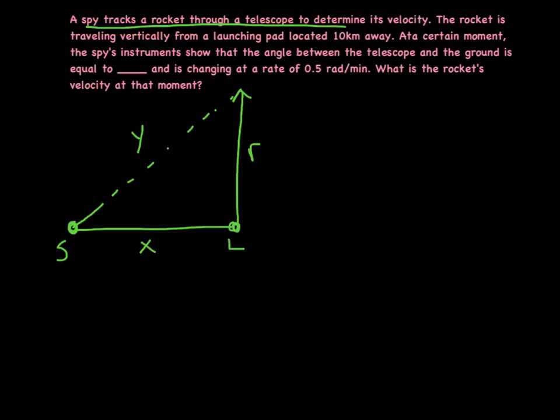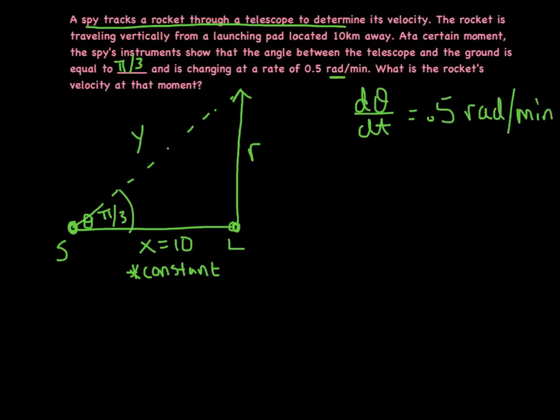Okay, now it says the rocket is traveling vertically from a launching pad located 10 kilometers away. So X is 10. And ladies and gentlemen, in the first time in these two videos, we finally have ourselves a constant. Alright, so let's make a little asterisk there and remind ourselves that that is a constant. The length of that side, the distance between the spy and the launching pad, is not changing. And we're going to definitely take advantage of that. Now at a certain moment, the spy's instruments show that the angle between the telescope and the ground is equal to, and this was supposed to say, pi over 3. I just couldn't write it in earlier. So then we'll put that right here. We've got pi over 3. Now it's not always pi over 3. It just happens to be pi over 3 for one precise moment. So I want to just emphasize that we'll call that angle theta. And it just happens to be pi over 3 for one instantaneous moment. But it certainly is not always that angle. And it happens to be growing or changing at a rate of .5 radians per minute. Notice we're always working in radians at all times in this class. So here's what I know. I know that d theta/dt is equal to .5 radians per minute.